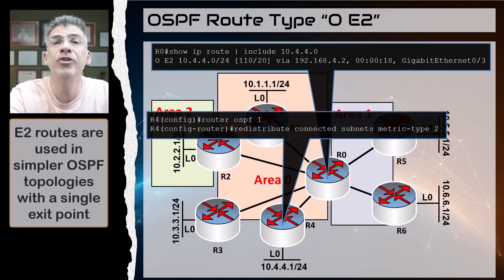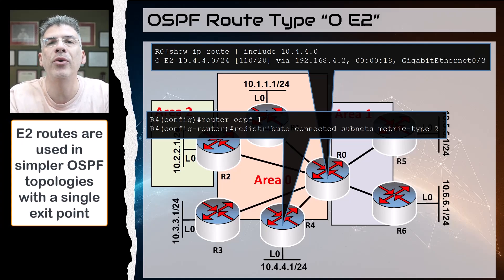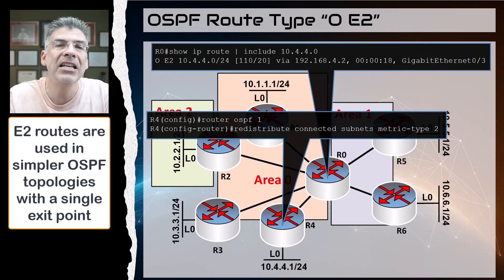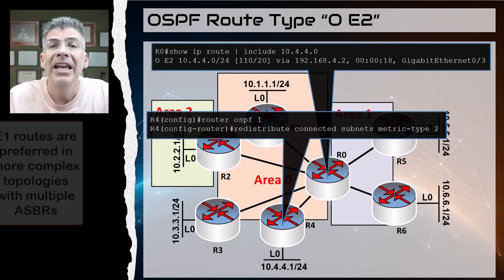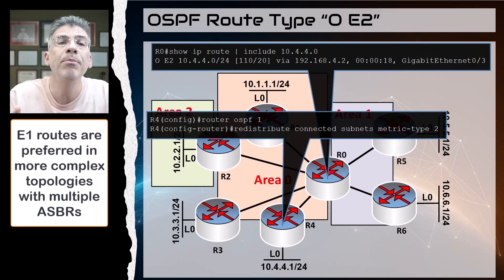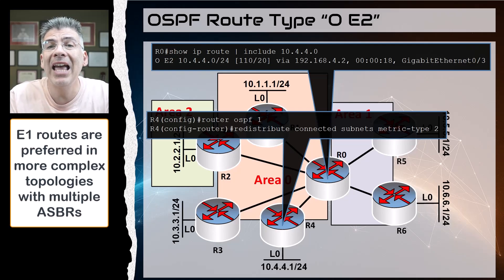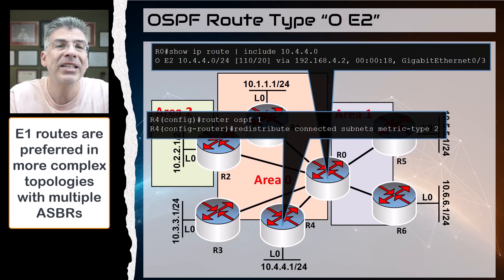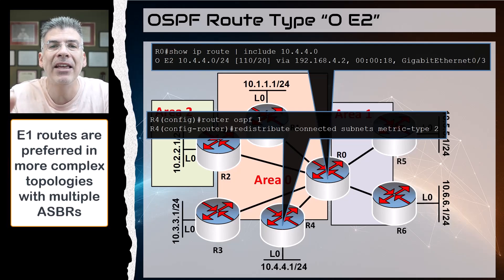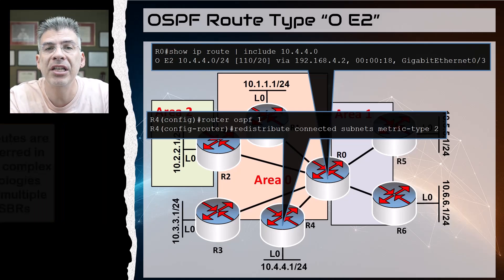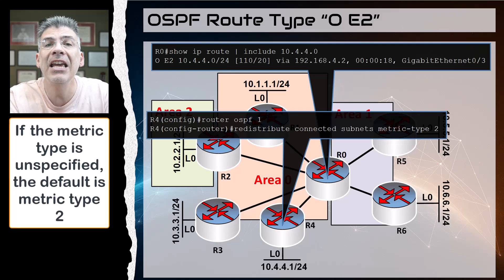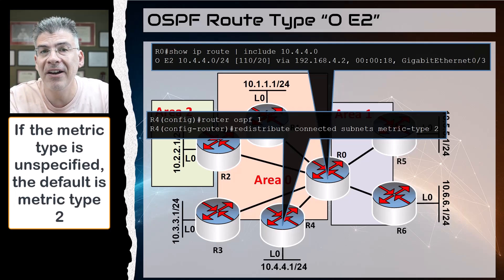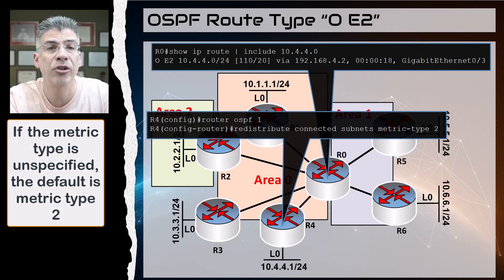E2 routes are commonly used in simpler OSPF deployments with a single exit point, while E1 routes are preferred in more complex topologies with multiple ASBRs where accurate end-to-end path cost matters for optimal routing decisions. The default metric type for redistribution, if not specified in the command, is type 2.